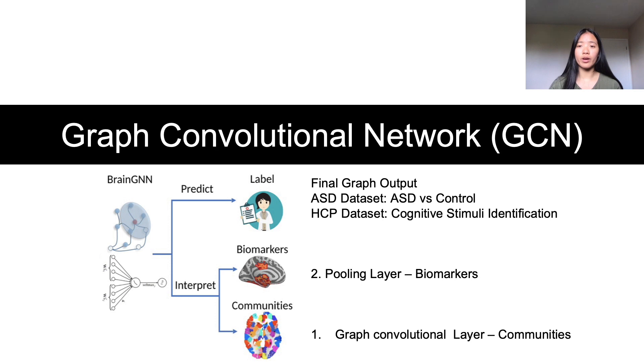Within the neural network, there are two types of hidden layers, and each of these intermediate layers provides a node level output. The first one is a graph convolutional layer, which performs node classification and provides information regarding community clustering in the brain. The second layer, called the pooling layer, only keeps the important nodes in the graph, which can be then used to identify biomarkers.